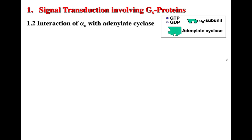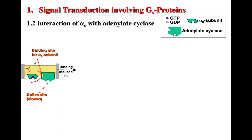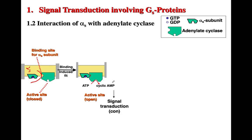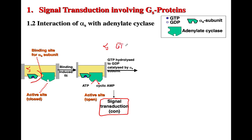The next stage involves interaction of the alpha subunit with adenylate cyclase. Adenylate cyclase has an active site that is normally closed, and it has a binding site for the alpha subunit. Binding of the alpha subunit to adenylate cyclase opens the active site, which allows binding of ATP and conversion of ATP to cyclic AMP — adenosine triphosphate to adenosine monophosphate. Alpha subunits have intrinsic GTPase activity, meaning they are able to cleave GTP into GDP.